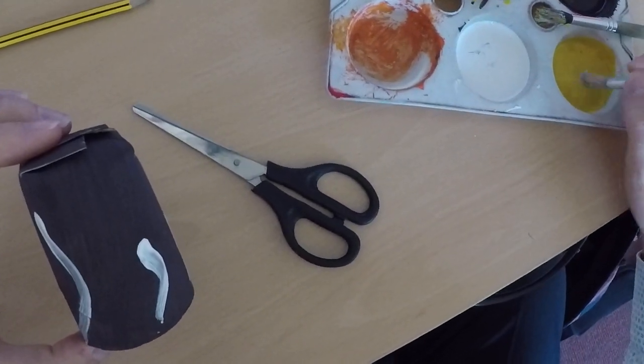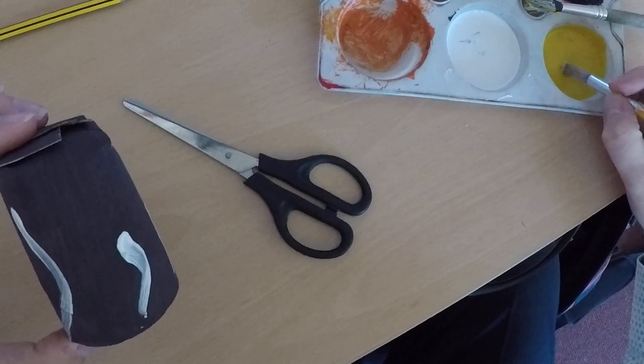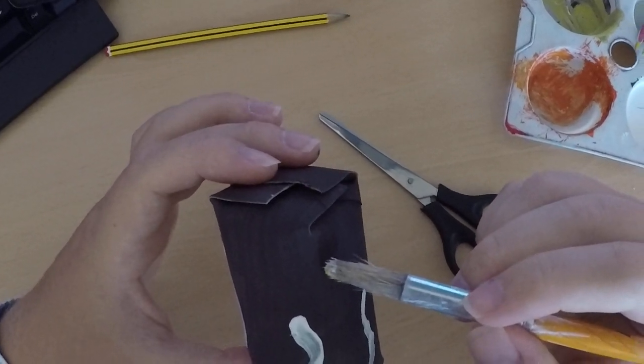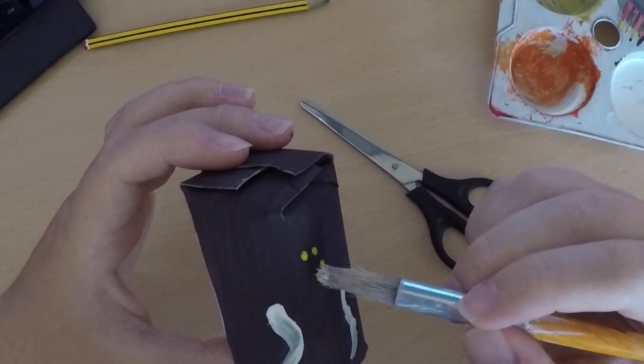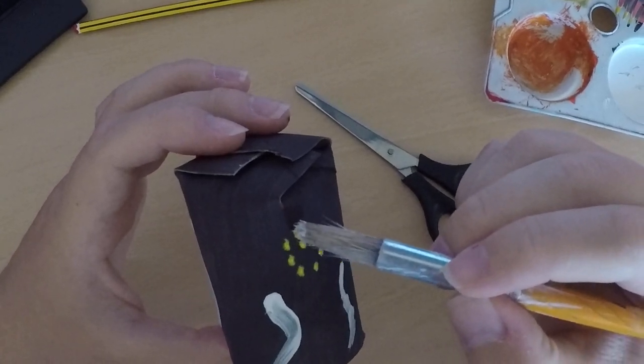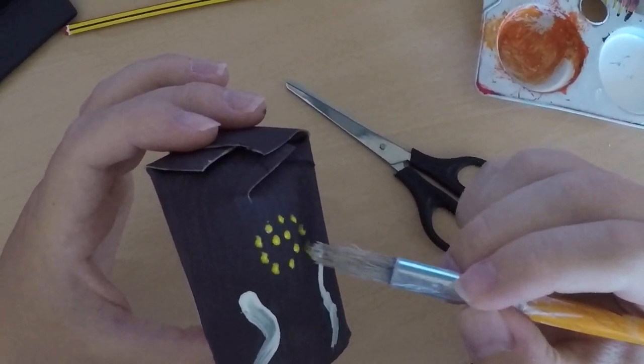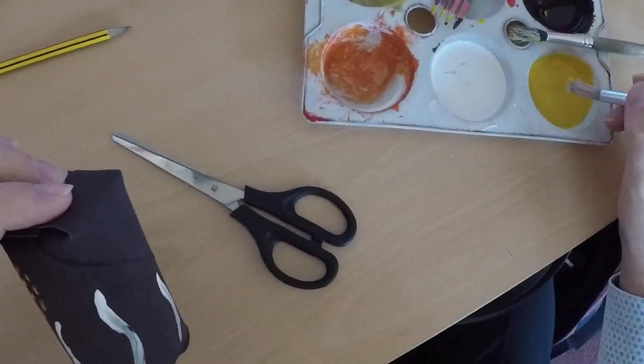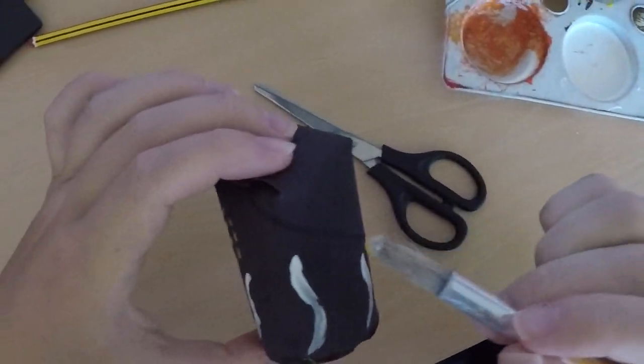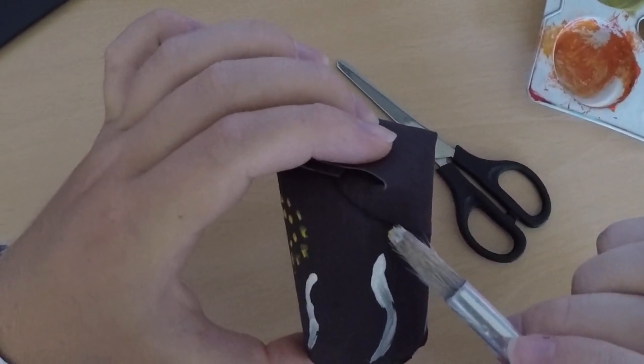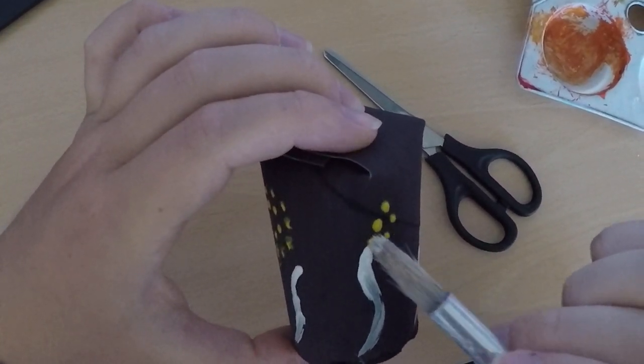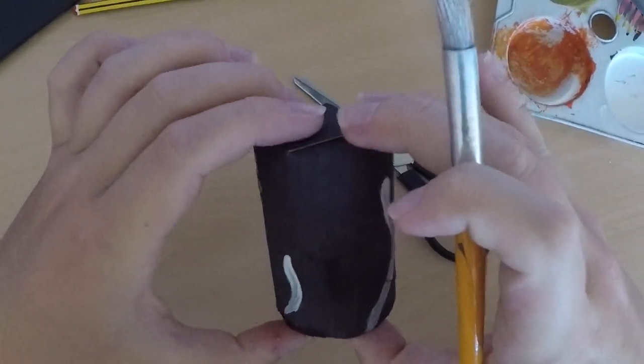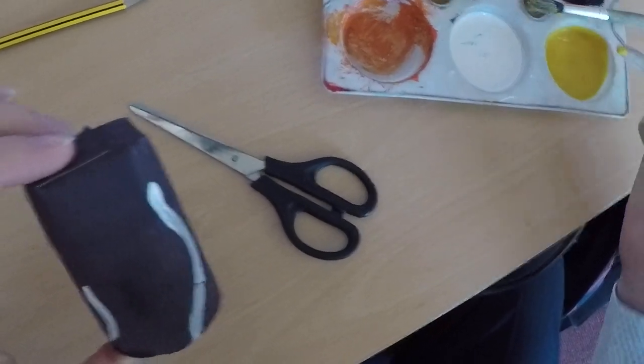And then I'm going to wipe off a little bit and I'm going to use some yellow if I can get it on the edge of my brush. I'm just going to put some little dots. You can decorate yours in any way you wish because it's your octopus, your colors.